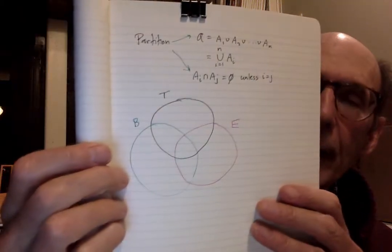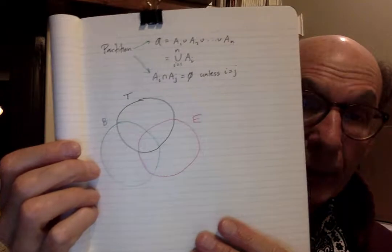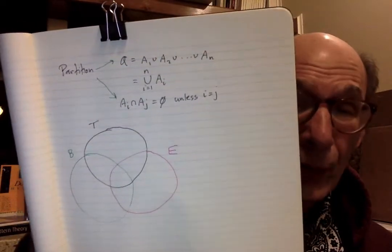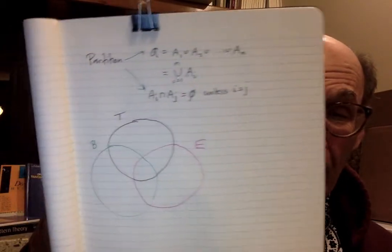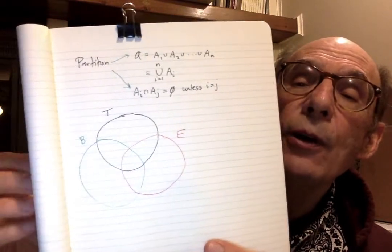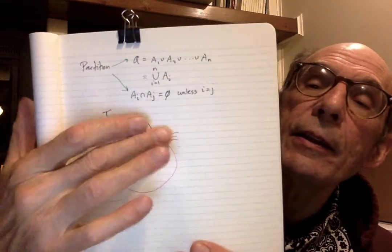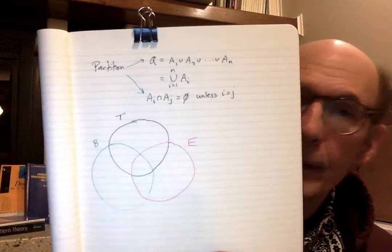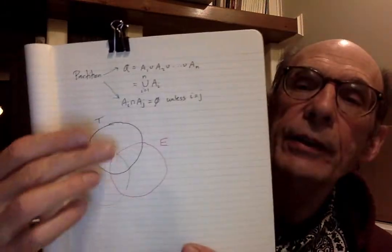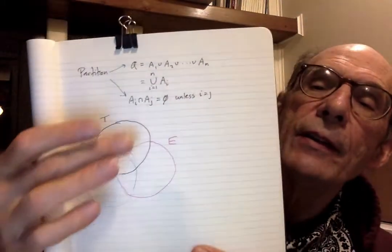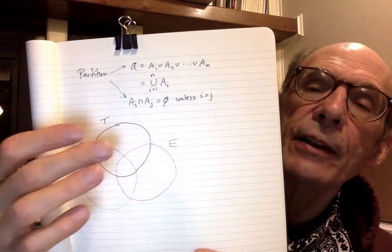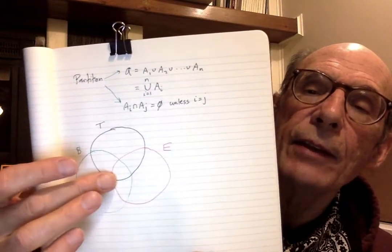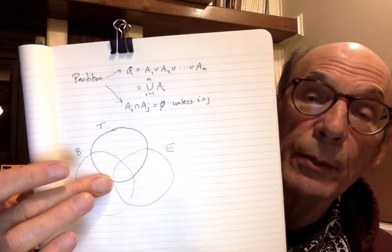I've got this Venn diagram that conceptually represents them — you can't really prove anything with a Venn diagram, but there it is. It looks like there's a grand union of all of these, and now you've got all these various intersections: T intersect E, and then the three-way intersection in the middle.